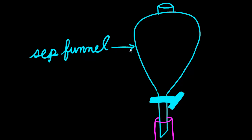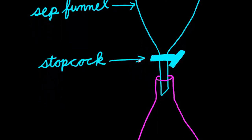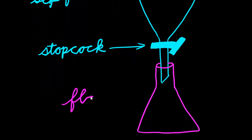And the sep funnel has an opening through the top where you can pour in your mixtures or your solutions and a stopcock at the bottom so that you can control the flow of the liquid from the sep funnel into the flask. And here I've shown the stopcock as being closed.